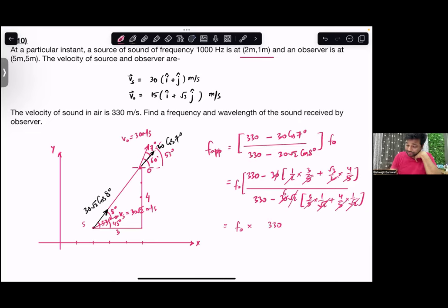If we calculate, then 4 into 1.73 is 6.92. Add 3, that means 9.92 comes. Multiply by 3, that means 29.76 comes. So now 29.76 divided by...